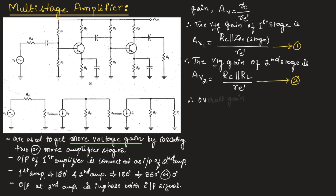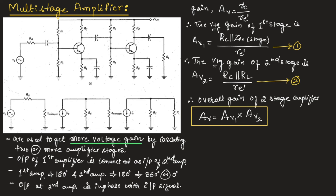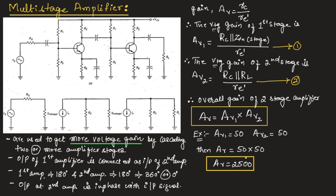Therefore, the overall gain of the two-stage amplifier is given as Av = av1 × av2, the gain of the first stage multiplied with the gain of the second stage. For example, if the gain of the first stage is 50 and the gain of the second stage is also 50, then the overall gain will be 50 × 50 = 2500 times.